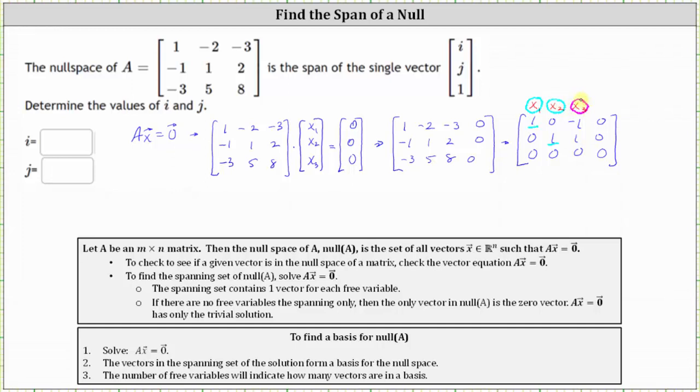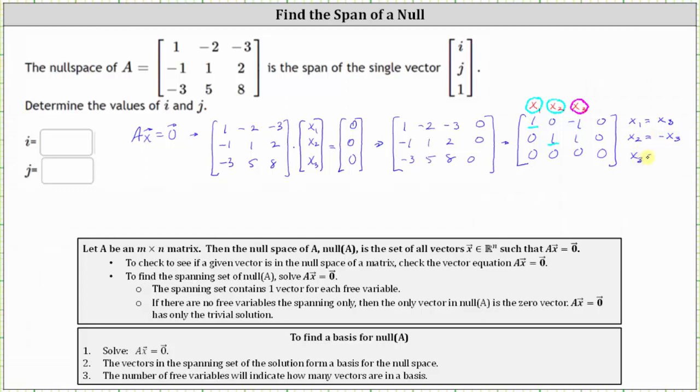And now let's write the corresponding equations. Row one indicates that x sub one minus x sub three equals zero. Solving for x sub one, we have x sub one equals x sub three. The second row indicates that x sub two plus x sub three equals zero. So solving for x sub two, we have x sub two equals negative x sub three. X sub three is a free variable. X sub three equals x sub three.